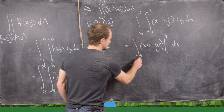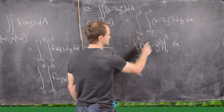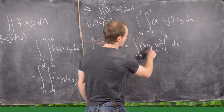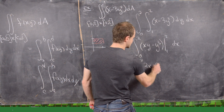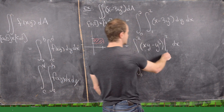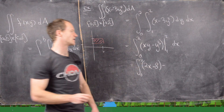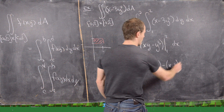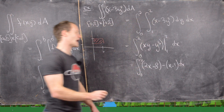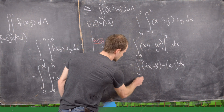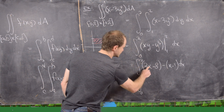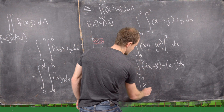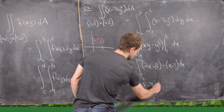Plugging in the bounds: if we plug 2 in, we get 2x minus 8; if we plug 1 in, we get x minus 1. So we have the integral from 0 to 2 of 2x minus x, then negative 8 plus 1, which simplifies to the integral from 0 to 2 of x minus 7 dx.